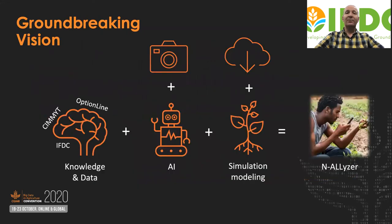The groundbreaking vision here is to put together the expertise of CIMIT, IFDC, and Option Line. This can be done through field experiments, big data, crop modeling, and analytics to provide farmers with a correct balance between nitrogen and other elements.